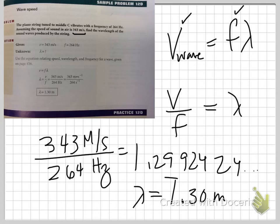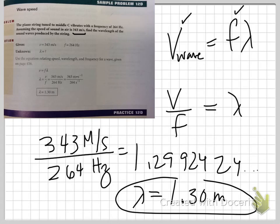Does that work out from a dimensional analysis standpoint? Hertz are cycles per second, which we can show as 1/seconds. Meters per second divided by 1/seconds gives us meters — so we get 1.30 meters for lambda.